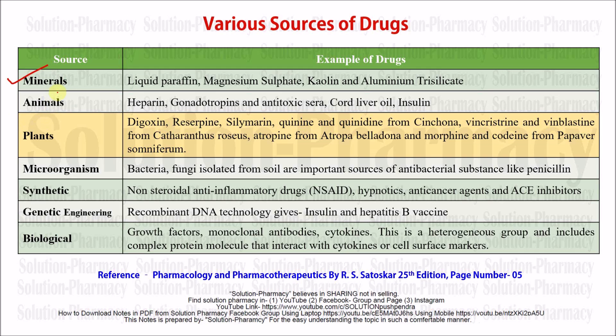Animal sources of drug are very important. Examples include heparin, which is an anticoagulant. Coagulation is a process in which blood gets clotted inside the blood vessel, which may cause many problems. Clotting in the brain may cause brain hemorrhage, and clotting in the coronary artery may lead to anginal pain. So it is very essential to dissolve that clot, and for that we need heparin.